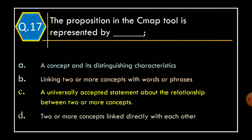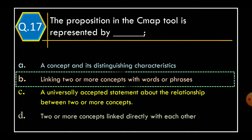Question 17: The Proposition in the CMAP tool is represented by — Option A: A Concept and its Distinguishing Characteristics; Option B: Linking two or more concepts with words or phrases; Option C: A universally accepted statement about the relationship between two or more concepts; Option D: Two or more concepts linked directly with each other. The correct option is Option B: Linking two or more concepts with words or phrases.